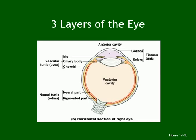The inner layer is called the neural tunic, which is basically the retina. The retina itself has two layers: an outer pigmented layer and an inner neural part. These three tunics are very important for both lecture and lab. You can get questions like: does the iris belong to the outer, middle, or inner tunic? Does the ciliary body belong to the outer, middle, or inner tunic?